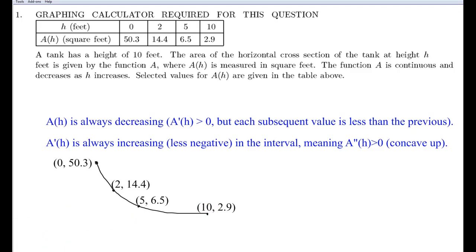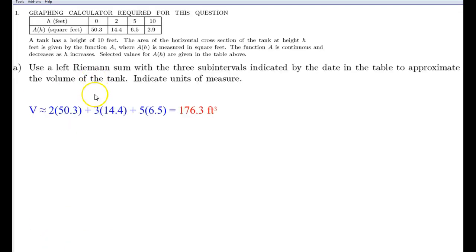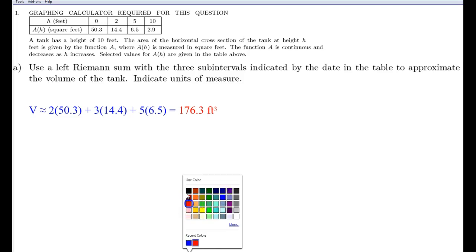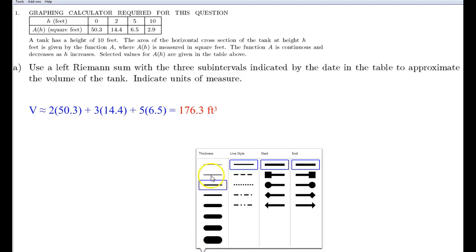On to the first question, part A. Use a left Riemann sum with the three subintervals indicated by the date in the table to approximate the volume of the tank, indicate the units of measure. So, here we go.